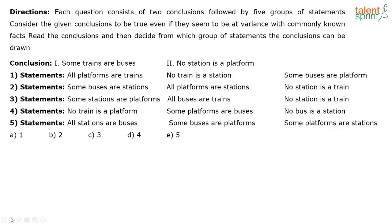Whenever you have questions on reverse syllogisms, one issue that a lot of students face — and I get this feedback — is that it is very time consuming. The question will actually be very easy but you have to represent each statement in the form of a Venn diagram and see if the conclusion follows. Like that you will have to do for five sets of statements, which is very time consuming. So how do you go about solving questions on reverse syllogism?